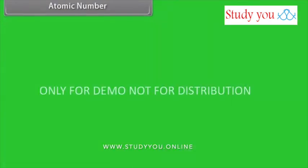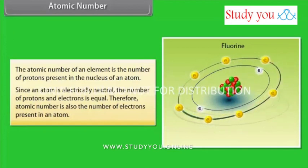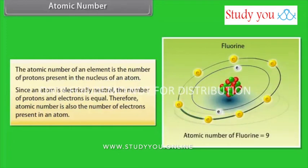Atomic number. The atomic number of an element is the number of protons present in the nucleus of an atom. Since an atom is electrically neutral, the number of protons and electrons is equal. Therefore, atomic number is also the number of electrons present in an atom.